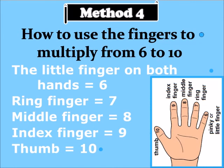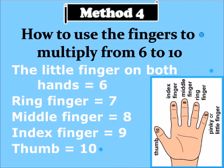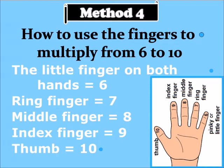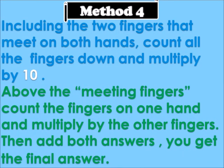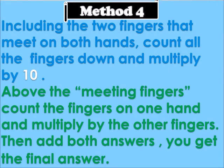Finger Counting Two — how to use the fingers to multiply from six up to ten. The little finger is known as six, the ring finger is seven on both hands, the middle finger is eight, the index finger is nine, and the thumbs are ten. Including the two fingers that meet — you put two fingers together from the left hand and right hand, count the meeting fingers downward and multiply by ten, and those above you multiply together.